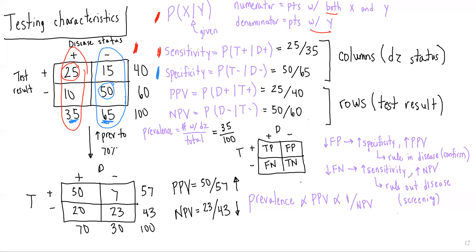It's important to contrast this with PPV and NPV. PPV is the probability of having disease given you had a positive test result. Both PPV and sensitivity share a numerator — patients with the disease and with a positive test result — but they differ in the denominator, because sensitivity is given positive disease status and PPV is given a positive test result.